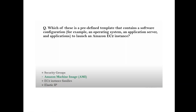Question: Which of the following is a predefined template that contains a software configuration — for example, an operating system and applications — to launch an AWS EC2 instance? Answer: Amazon Machine Image (AMI).